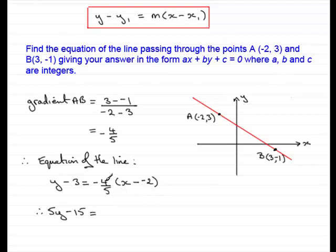So, we've got -4 times x, which is -4x. And then we have -4 times +2, which is -8.